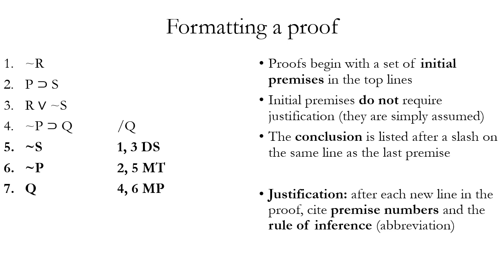To create another line of a proof, we continue the numbering from the premises — in this case, going to line five. Whenever we add a new line to the proof, we have to give a justification to the right of each new step. It names one or more premises used to derive that step and also names the rule used. For example, on line five, we look at premises one and three to justify it.